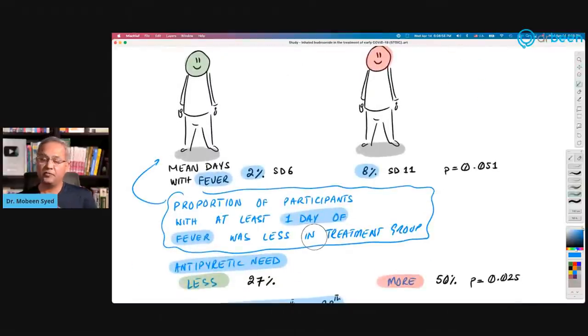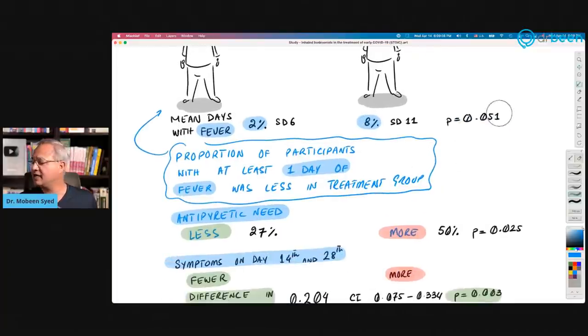So then there was the fever, mean days for the fever. So two percent had fever here, six percent, eight percent here, P was significant as well, slightly above the significance or slightly out of 0.051 instead of 0.05 or lower. The proportion of participants that had at least one day of fever was less in the treatment group. So they had less fever as well, which is a very interesting thing.